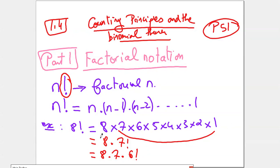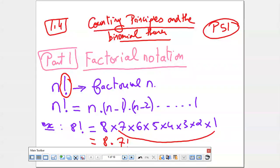I can decompose it differently to be able to simplify. So factorial 8, I can write, for example, 8 times factorial 7. I can write even 8 times 7 times factorial 6. It's linked to what I want to use for the simplification. You will see it in the application.